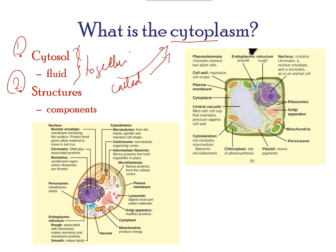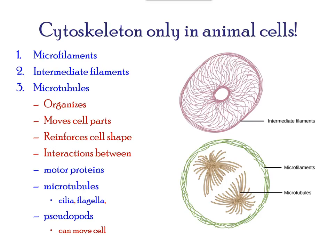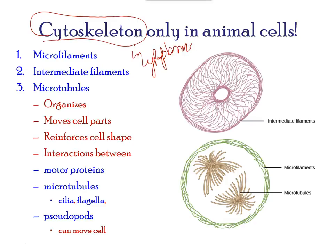The answer is no. In the cytoplasm, there would still be ions and organic molecules, plus a network of protein fibers that helps to maintain the shape of the cell, secures certain organelles in specific positions, allows cytoplasm and vesicles to move within the cell, and enables unicellular organisms to move independently. Collectively, this network of protein fibers is known as the cytoskeleton.